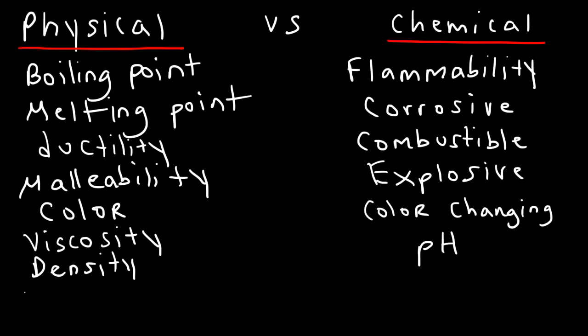Other things that are physical properties: mass is a physical property, and so is weight. These have to do with the quantity of matter, or the force that they exert on the Earth. They don't have to do with how substances react with another element. Volume is another physical property.